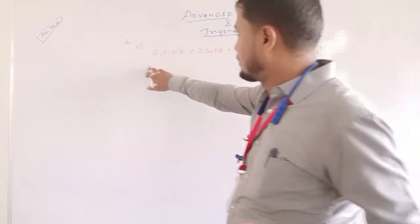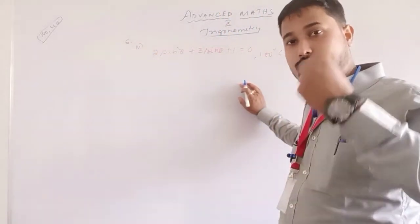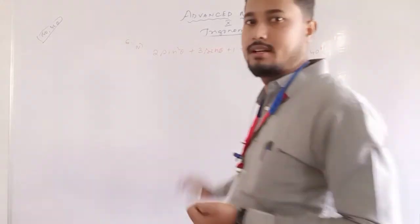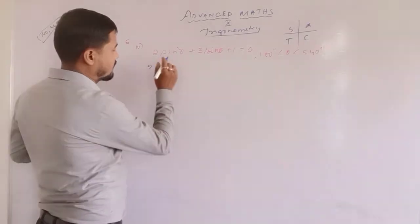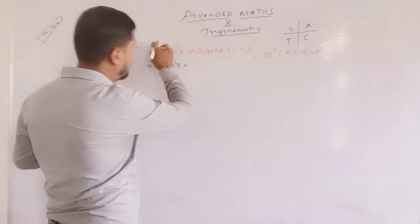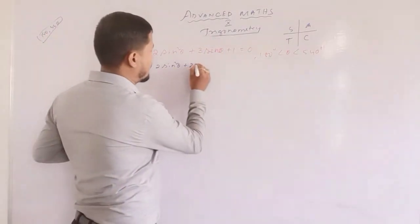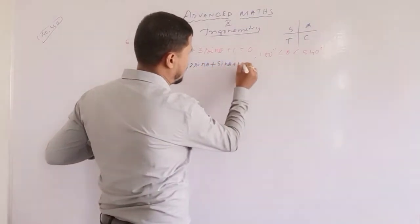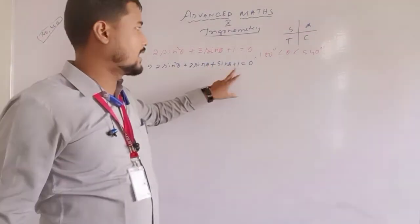If this type of question is there, first you do middle term splitting, then you take 2 values, and check whether the 2 values are satisfied or not, then you find the value of theta. Now I write it: 2sin²θ. If I do middle term, 2sin²θ gives 2sinθ + sinθ + 1 = 0.